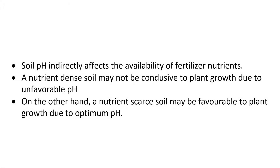The pH of soil is not a direct indication of fertility, but it does affect the availability of fertilizer nutrients. A soil may contain adequate nutrients yet growth may be limited by a very unfavorable pH which renders the nutrients unavailable to the plants. On the other hand, a soil that is virtually devoid of nutrients may have a favorable pH for optimum plant growth.